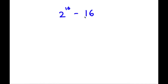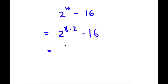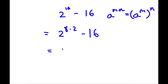So I have 2 to the power of 16 minus 16. Now 16 here is the same thing as 8 times 2, so now I have 2 to the power of 8 times 2 minus 16. Now if I have something in the form a to the power of m times n, this is equal to a to the power of m to the power of n. So 2 to the power of 8 times 2 equals 2 to the power of 8 to the power of 2, minus 16, which I can rewrite as 4 squared.